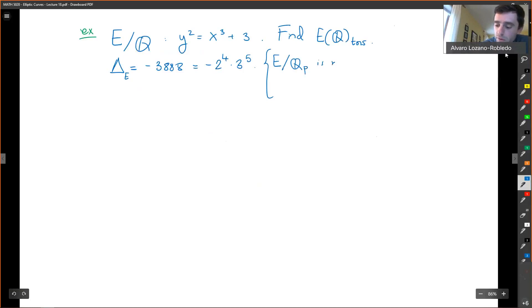This tells me two things. E over Q_P is minimal for all primes P, right, because the power of 2, 3, or any other prime is less than 12, and we have integer coefficients.